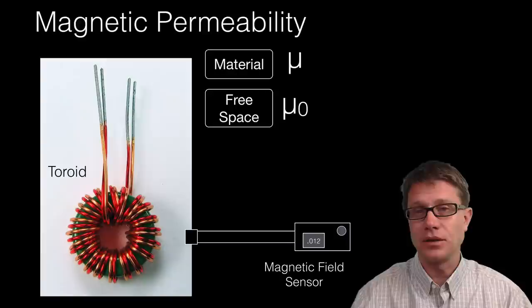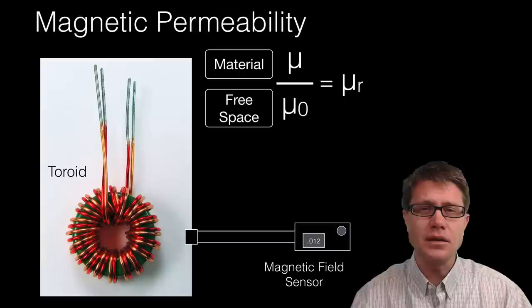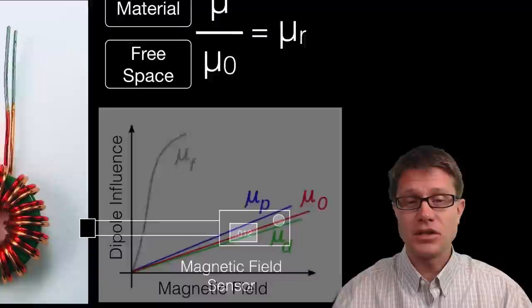And so the relative permeability or mu sub r is going to be a way to determine if this is ferromagnetic, paramagnetic or diamagnetic. And so this chart should make sense to you.